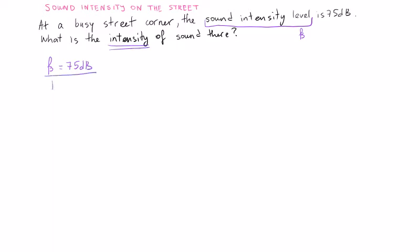What do I know about the relationship between intensity and sound level? Sound intensity level equals 10 decibels times log of I over I₀, where I₀ is the threshold intensity. From here I can find the intensity.